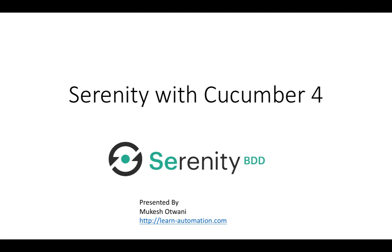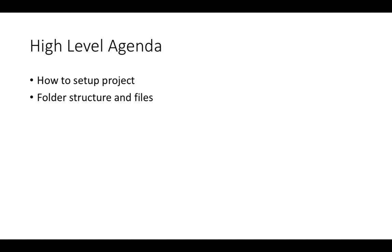In this lecture we are mainly going to talk about how you can set up your project with Cucumber 4, the folder structure, the default configuration files and other files you will get when you configure your project. Then we will run some existing tests which come along with the GitHub repository we will download. We will verify the reports, and once everything is running fine, we will go ahead and create our own test scenarios and run them with Serenity, and we will also customize the report.